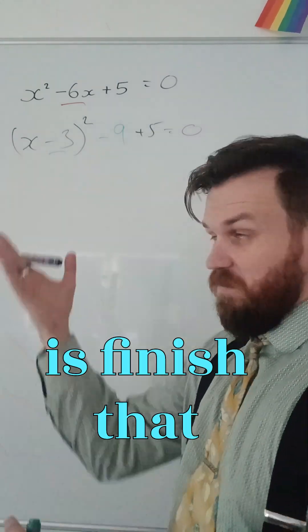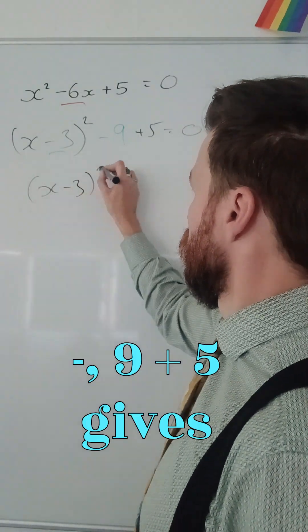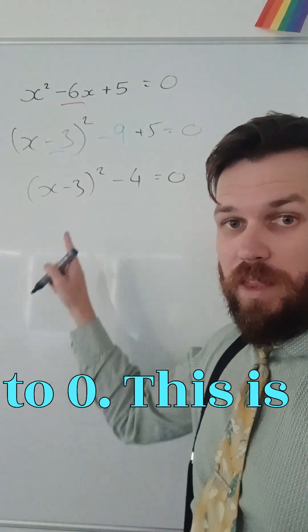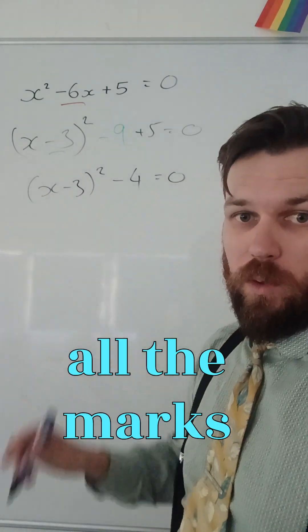So, what I need to do now is finish that off. So, I've got x minus 3 squared minus 9 plus 5 gives me negative 4, and that is equal to 0. So, this is completed square form, that's where all the marks are.